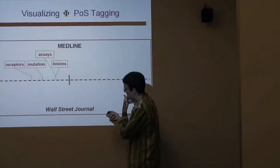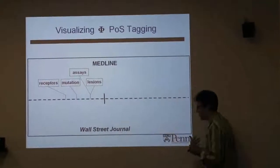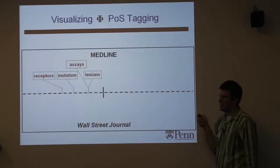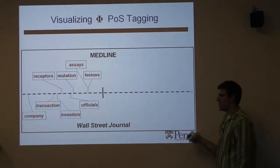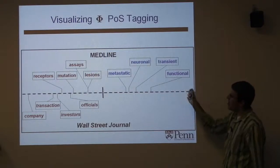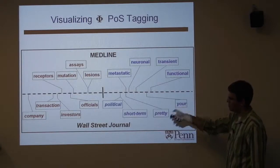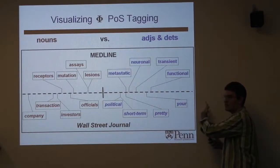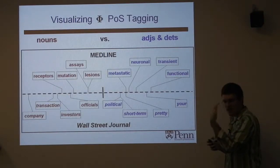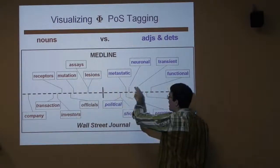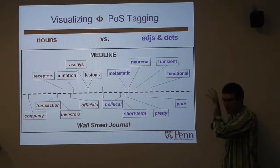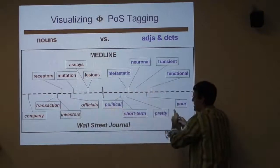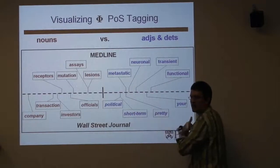Here's the same visualization of the projection onto a single dimension from Phi. Only in MEDLINE: 'receptors,' 'mutation,' 'assays,' 'lesions' are negative under this projection. Only in Wall Street Journal: 'company,' 'transaction,' 'officials.' Only in MEDLINE, positive: 'metastatic,' 'neuronal,' 'transient,' 'functional.' Versus 'political,' 'short-term,' 'pretty' from the WSJ. This projection is separating nouns on the negative side from adjectives and determiners on the positive side. Even if we haven't seen any of these MEDLINE words, we can do good discriminative learning by using their projection and their similarity with WSJ words for which we have lots of labeled data.